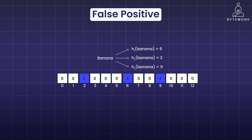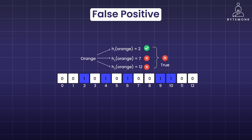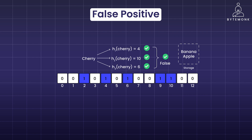Let's understand false positives with specific examples. We have three hash functions. The banana object is added to the Bloom filter; the hash functions output values 6, 2, and 9, so the array elements at those indexes are changed to 1. Then we insert apple; the array elements at indices 10, 9, and 4 are assigned to 1. The ninth element was already 1, so its value doesn't change. During lookup, when we check if orange is present, at least one hash function outputs an index — 7 and 12 — whose array element is 0, so orange does not exist in the filter. But when we look up cherry, we get a false positive: even though cherry was not added, all hash values for cherry point to array elements with value 1.